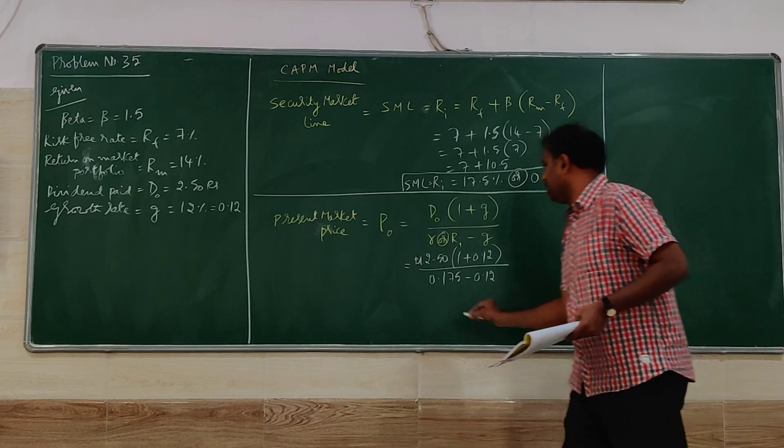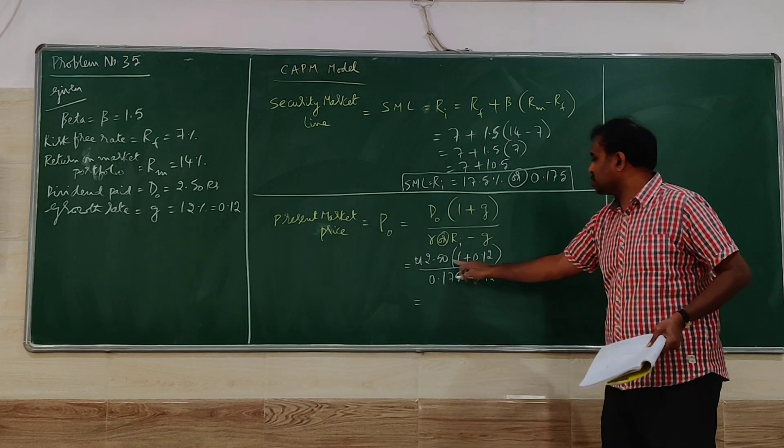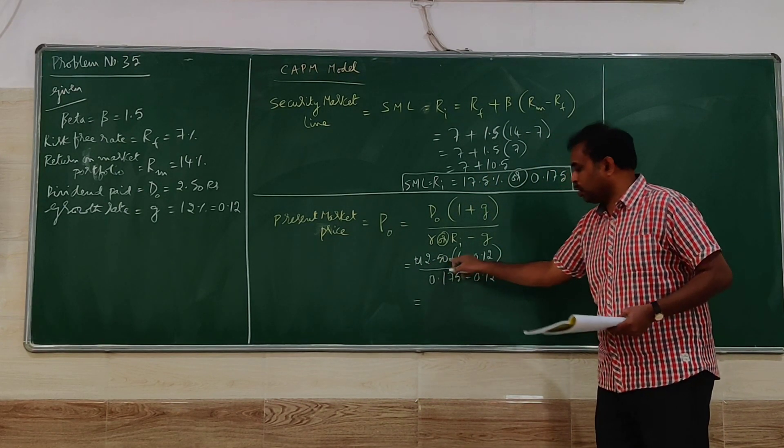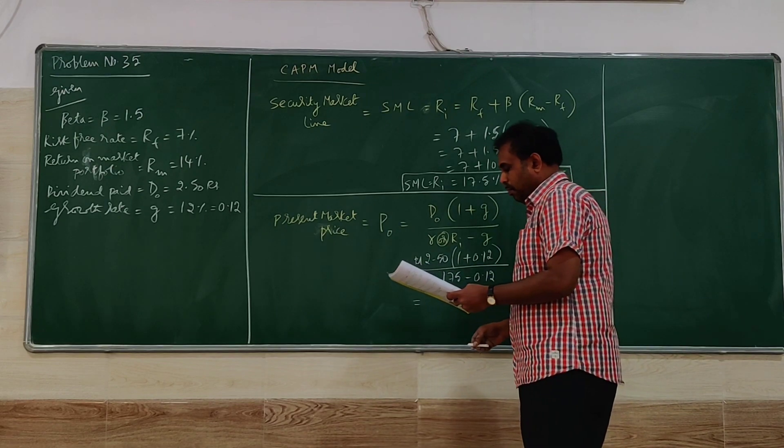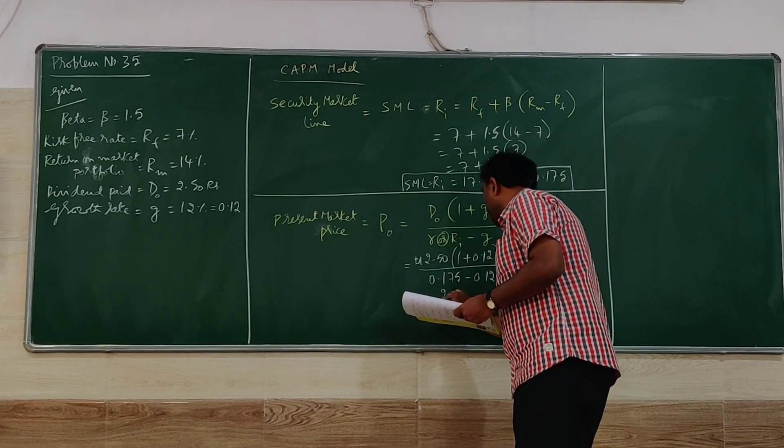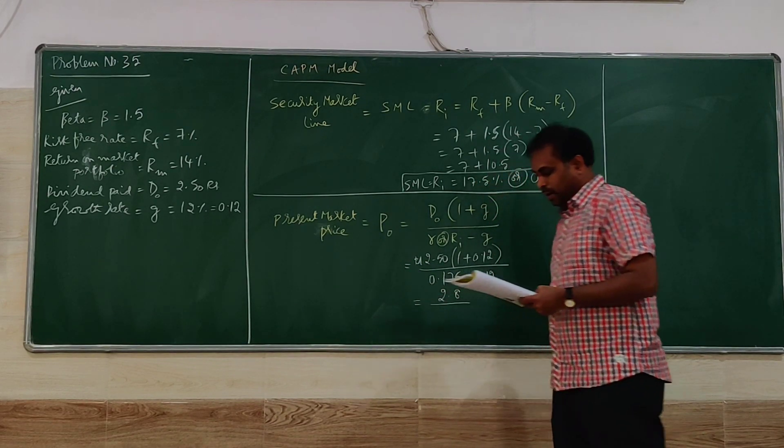So if you simplify here further, 1 plus 0.12 into 2.5 that is going to give 2.8 as the answer.